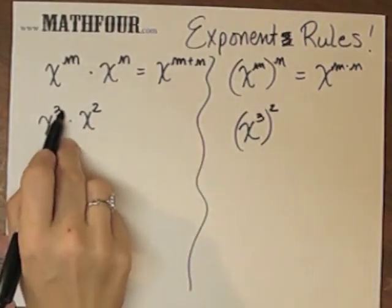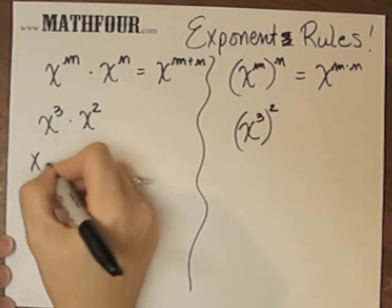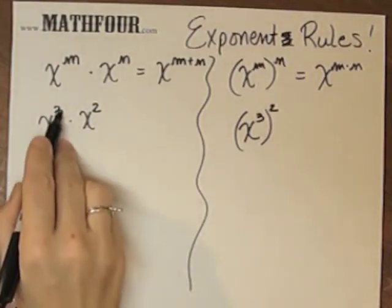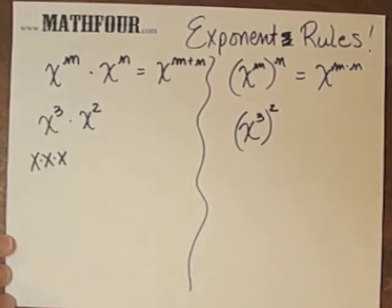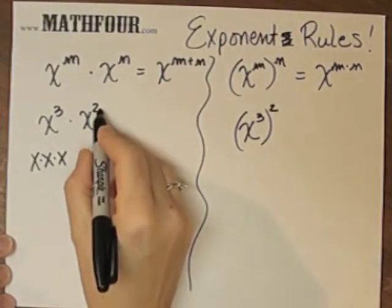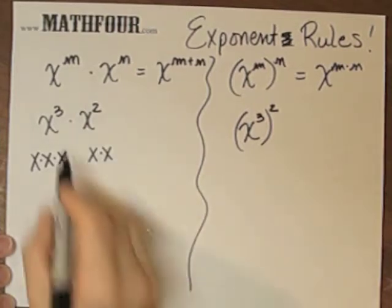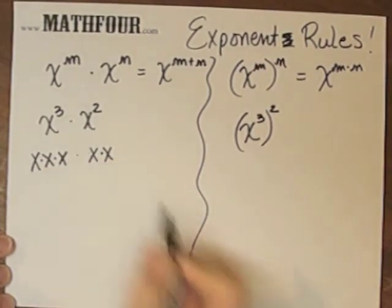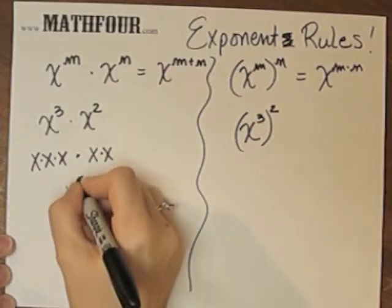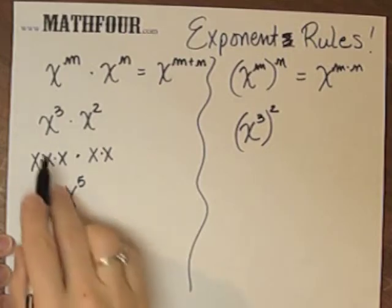x cubed means x times x times x, right? This is 3 copies of x multiplied together. x squared means 2 copies of x multiplied together. And look, we have this little multiplication right here. So how many x's do I have? I have 5.